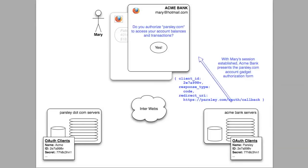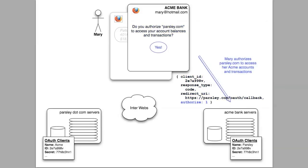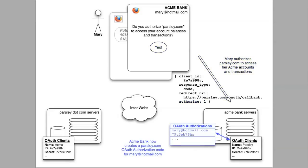Now that Acme knows it's Mary, it responds to her original request for the access token granting authorization form. Note that the client ID and redirect URI are still along for the ride here — they're being rendered as hidden fields on the authorization form. Mary grants authorization, and again the client ID and redirect URI identifying this as a Parsley request are still along for the ride making their way back to the server.